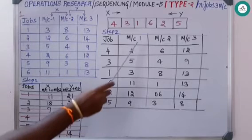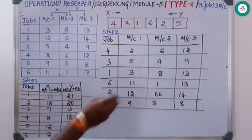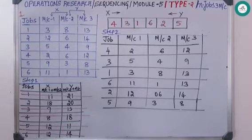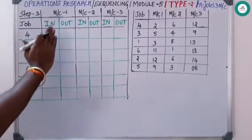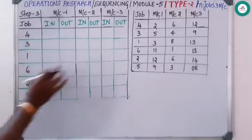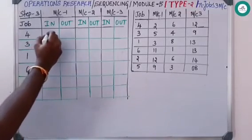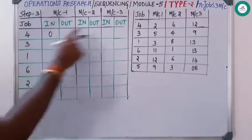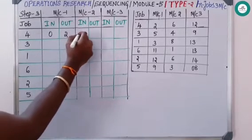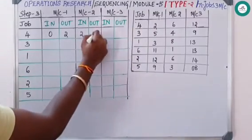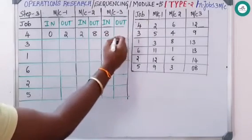Proceeding with Step 3: as usual, for each machine give in and out times to calculate total minimum elapsed time. Starting time is zero. Zero plus processing time 2 = 2 hours. Machine two can start after two hours: 2+6=8 hours. Machine three starts after 8 hours: 8+12=20 hours.